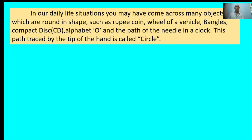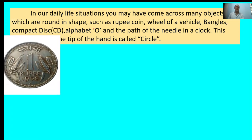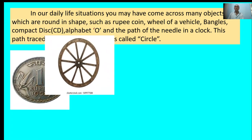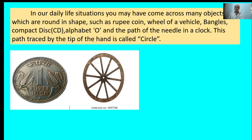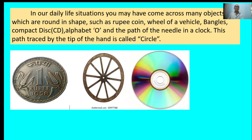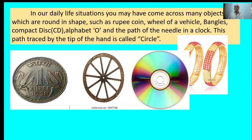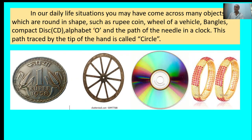Daily you see rupee coins, wheels of vehicles, bangles, compact discs. Which shape is there? Those are circle shapes. Rupee coin - circle shape, wheel of a vehicle - circle shape, compact disc - also circle shape, bangles - also circle shape.